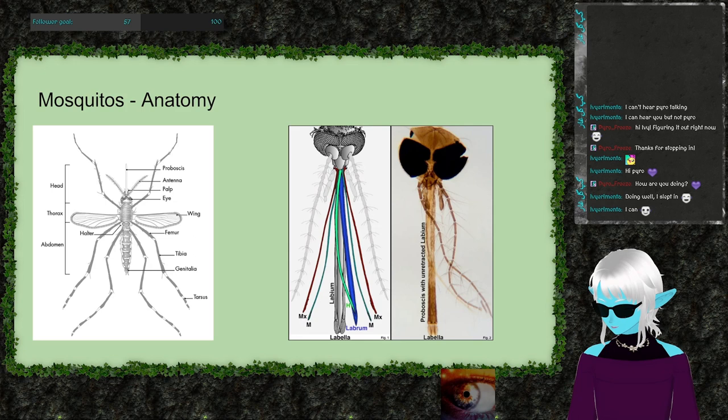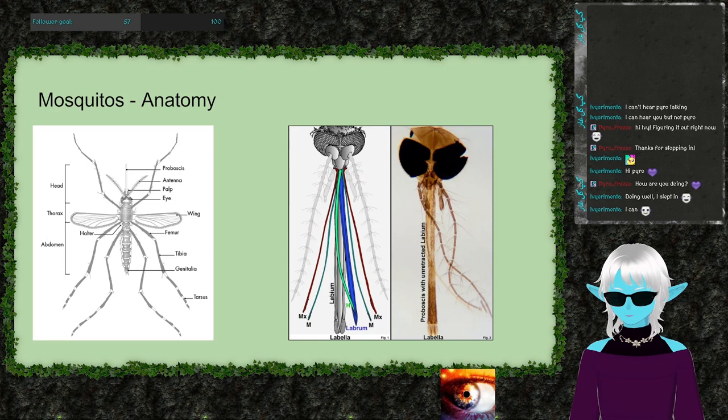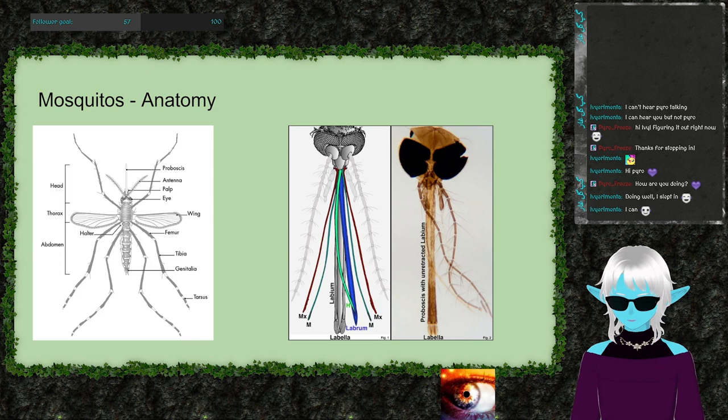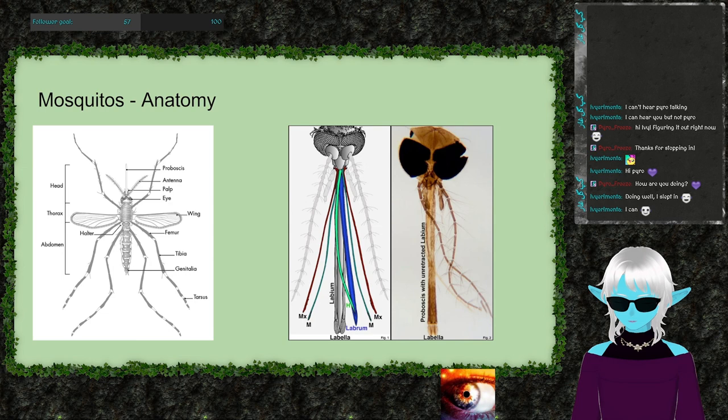The genera responsible for transmitting viruses are Culex, Anopheles, and Aedes. Out of the 42 genera, only three are responsible for human bites, and within those, only certain species can actually pass on diseases. So depending on where you're located, there's really not that much to worry about.